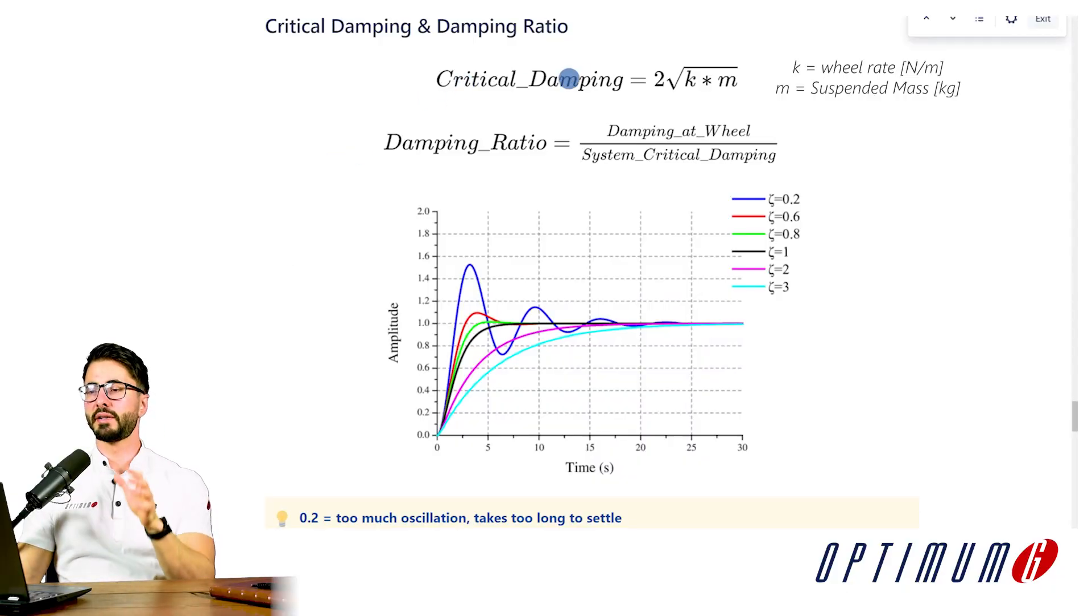But how do we quantify damping? There are two main metrics that we have to discuss. The first one is critical damping. Critical damping is basically a property of the system. So based on the stiffness of the system and the mass of the system, we can understand what is the critical damping.